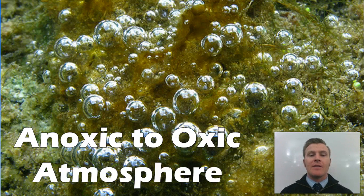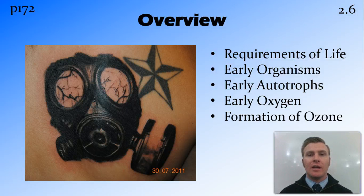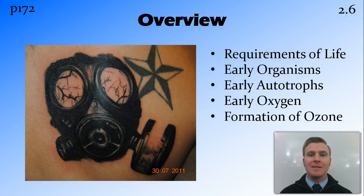In this video, we're going to look at the change from an anoxic to an oxic atmosphere. We're going to talk about the requirements for complex life, some of the early anaerobic organisms, as well as the early autotrophs that produced the oxygen, what happened to that early oxygen, and the formation of the ozone layer.